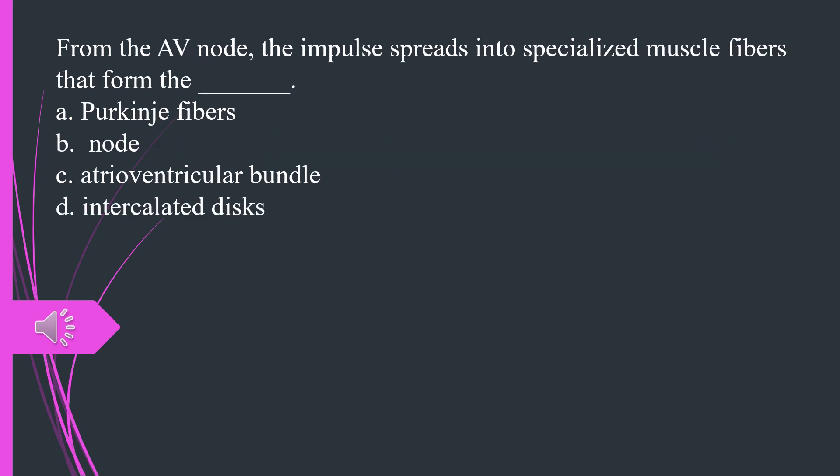From the AV node, the impulse spreads into specialized muscle fibers that form the A. Purkinje fibers B. Node C. Atrioventricular bundle D. Intercalated discs. The answer is C, atrioventricular bundle.